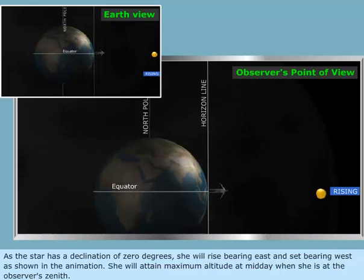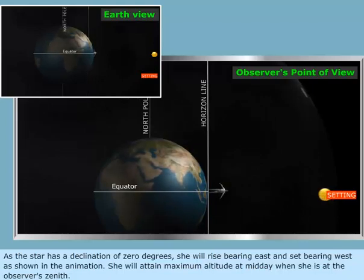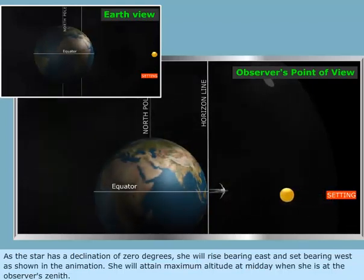As the star has a declination of 0 degrees, she will rise bearing east and set bearing west as shown in the animation. She will attain maximum altitude at midday where she is at the observer's zenith.